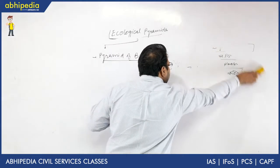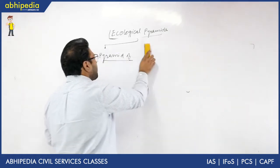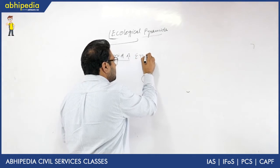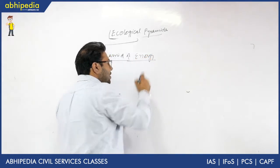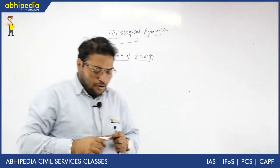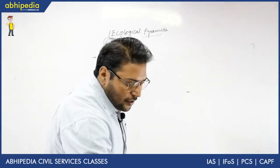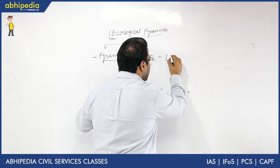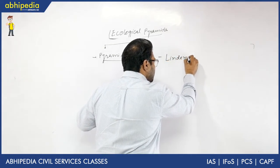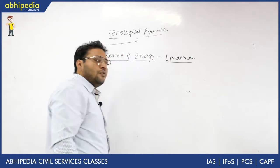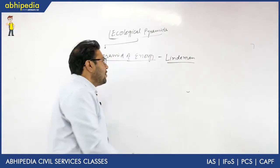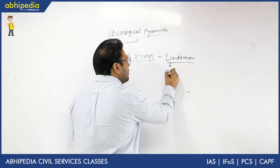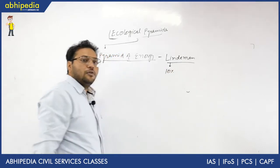The next type is the Pyramid of Energy. In this context, we should know Lindeman's law. According to Lindeman, only 10% of energy is generally transferred from one trophic level to another.